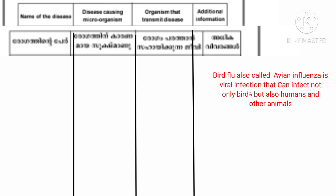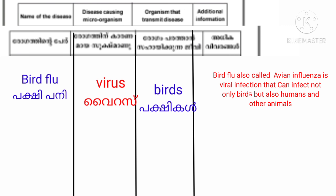The next disease is Bird Flu. The disease-causing microorganism is a Virus. The organisms that transmit the disease are Birds. Additional information: Bird flu, also called avian influenza, is a viral infection that can infect not only birds but also humans and other animals.